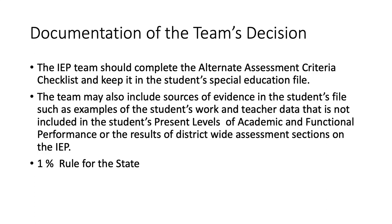After the team has worked through the four questions on the checklist, they should complete the alternate assessment criteria checklist and keep it in the student's special education file. The team may also include sources of evidence in the student's file, such as examples of the student's work and teacher data not included in the student's present levels of academic and functional performance or the results of district-wide assessment sections on the IEP.